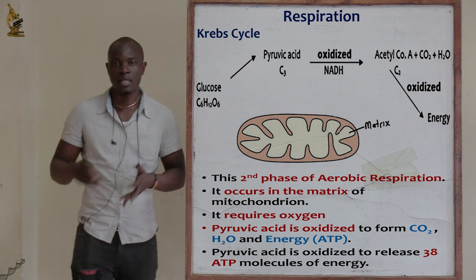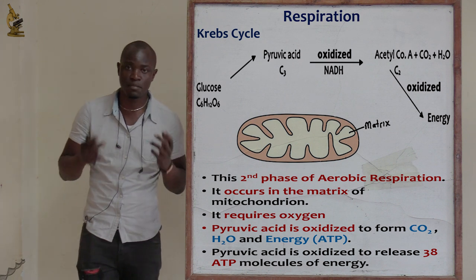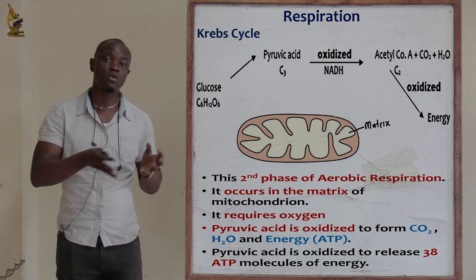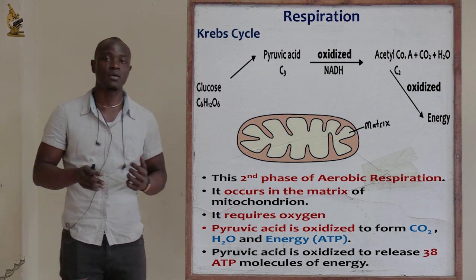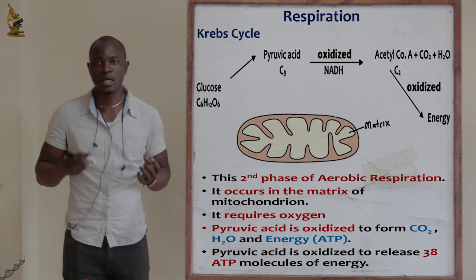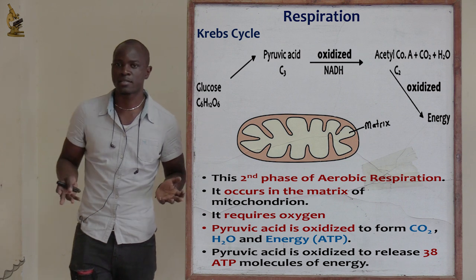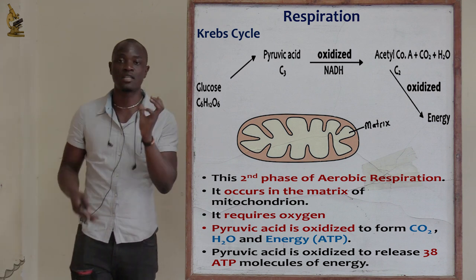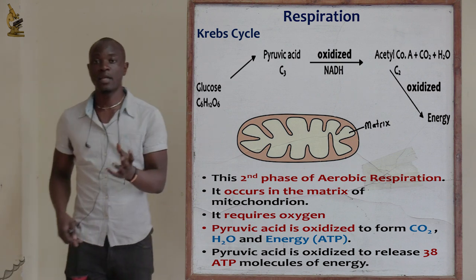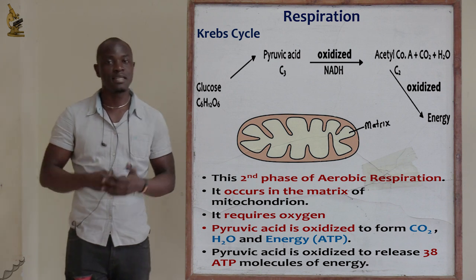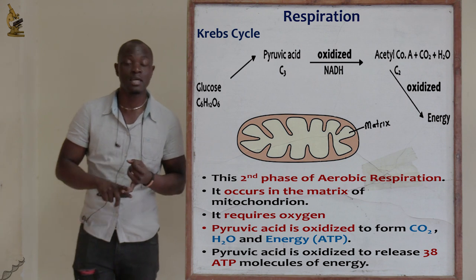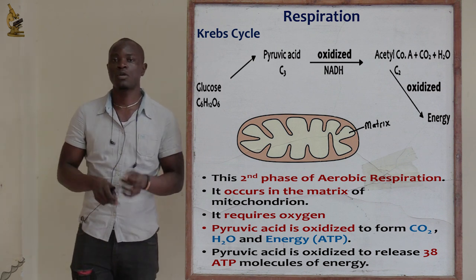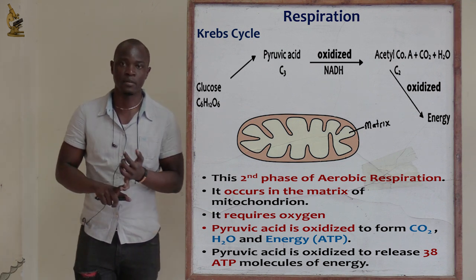In the Krebs cycle, pyruvic acid from glycolysis is further broken down by the use of oxygen — it is oxidized to form acetyl coenzyme A, which is further oxidized to give energy, carbon dioxide, and water. As soon as oxygen is involved with the pyruvic acid, it ceases to be glycolysis and becomes the Krebs cycle. The function of oxygen in the Krebs cycle is to break down pyruvic acid to form carbon dioxide, water, and energy.